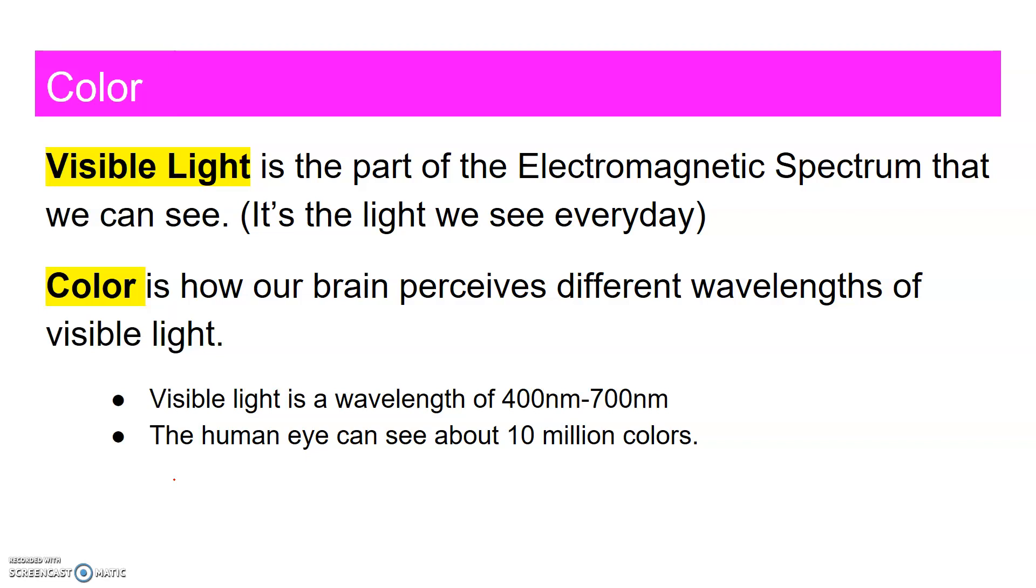On the electromagnetic spectrum, the visible light is from anywhere from 400 nanometers to 700 nanometers.